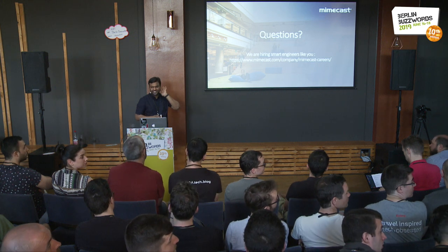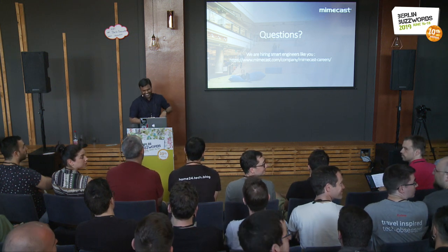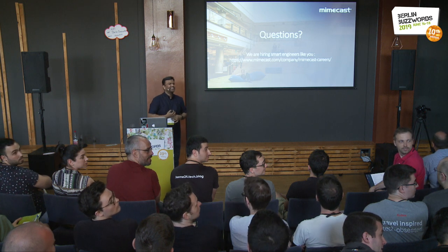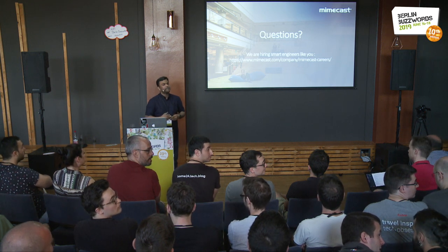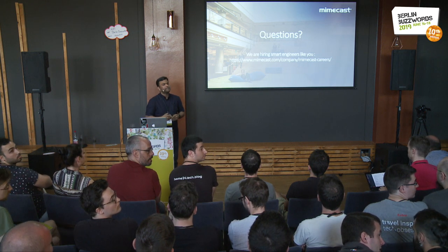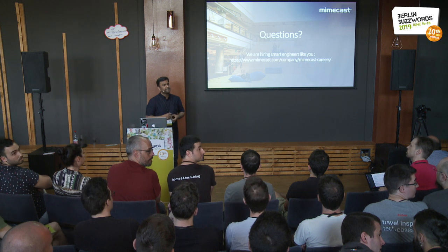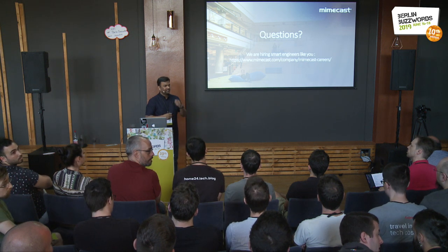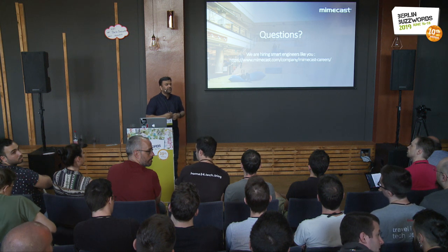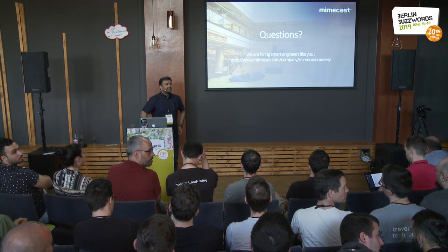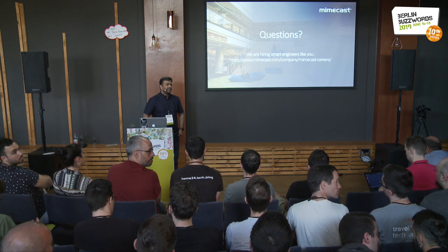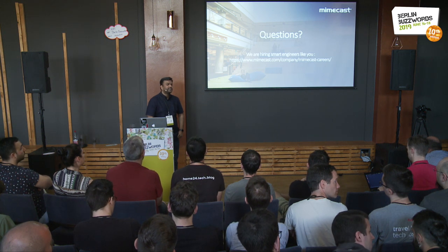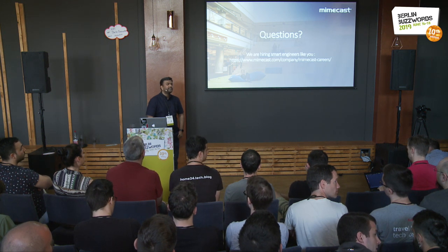Question from the audience: multilingual search is incredibly hard and incredibly important. You built a language detector, which is a missing piece of infrastructure in the open source world. Two questions: Do you know about Google's Compact Language Detector, which is an open source language detector factored out of the Chromium open source web browser? And second — do you have plans to open source your model?